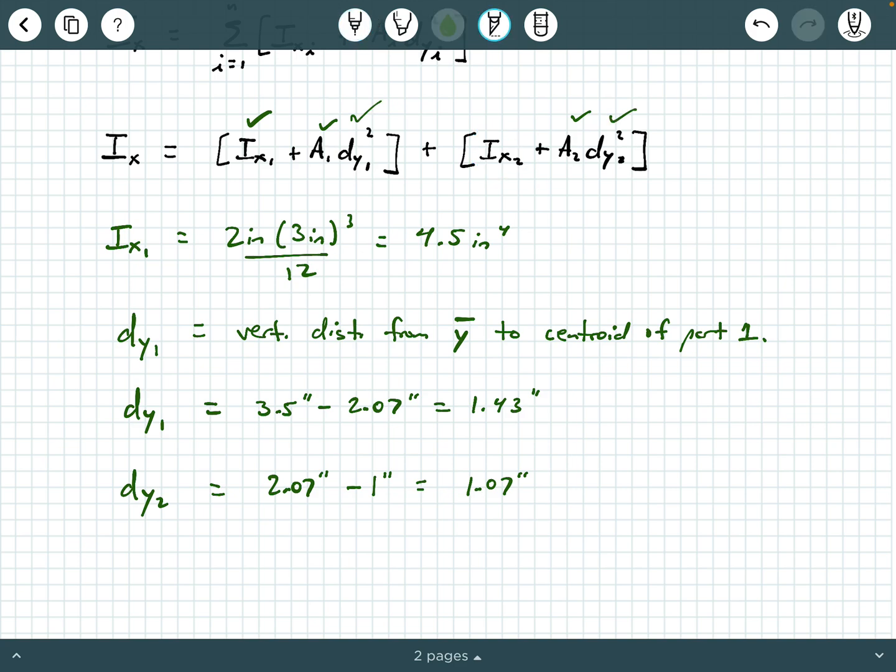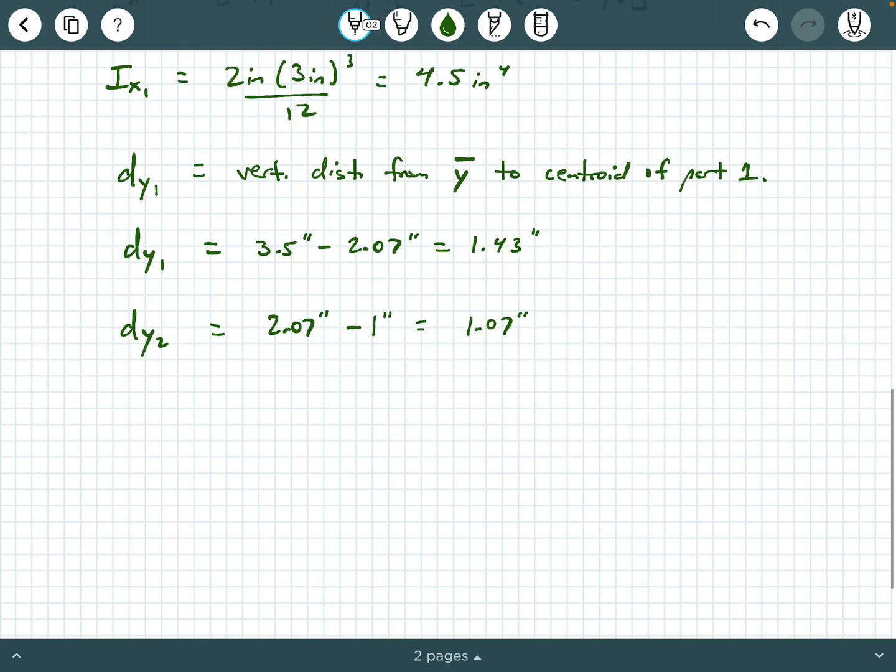We still need to get I X 2. So that's of the bottom flange. I X 2 is going to be, again, B H cubed over 12 of the bottom rectangle. So 4 inches times 2 inches cubed over 12. And again, looking at that bottom rectangle, I get 2.67 inches to the fourth here.